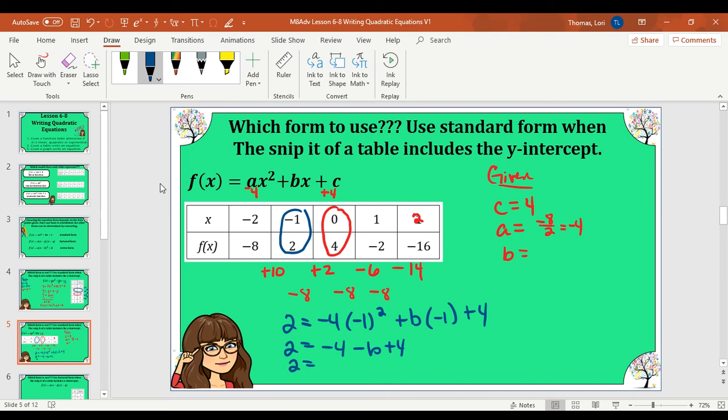So we have 2 equals, we're going to combine negative 4 and 4. That gives me 0. So I just have negative b. Now we need to divide both sides by the negative 1. And my b value is negative 2. Now let's write our function. f of x equals my a value times x squared minus 2 for my b value. And then my c value is plus 4.